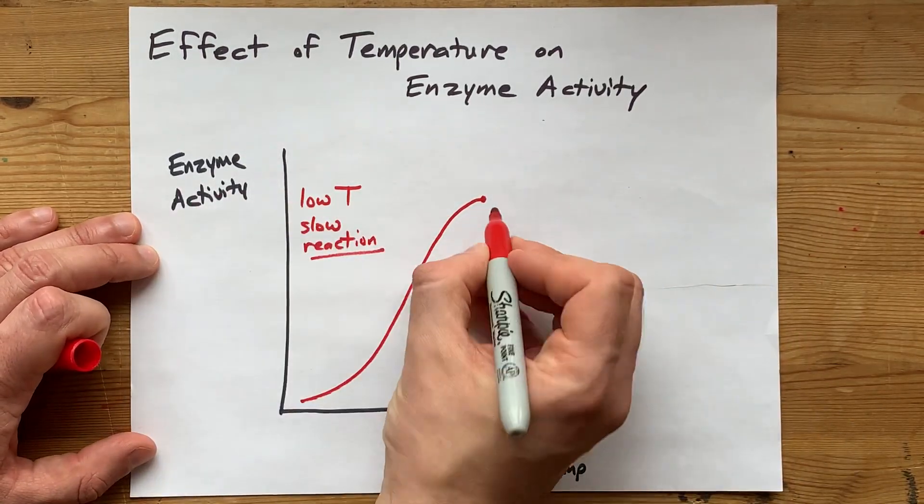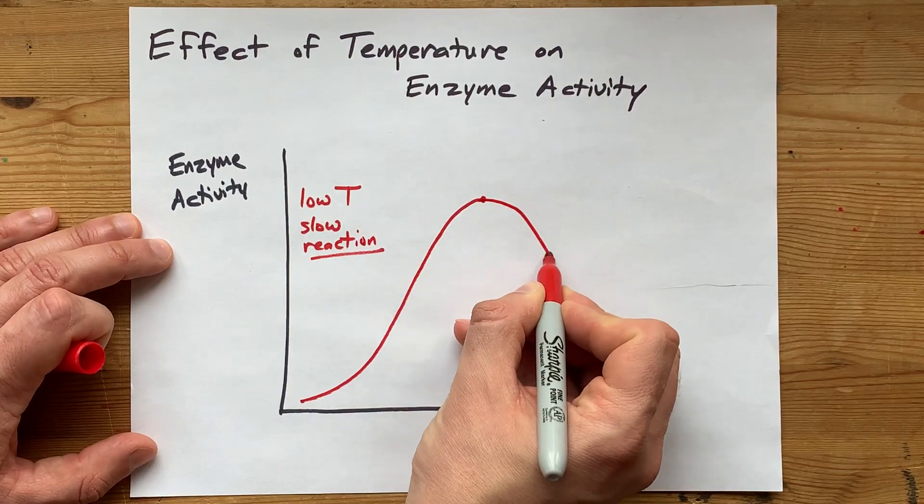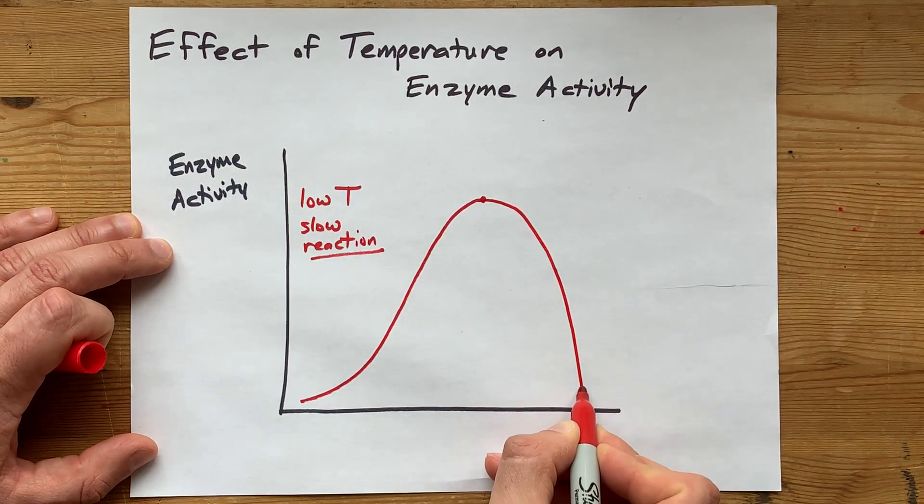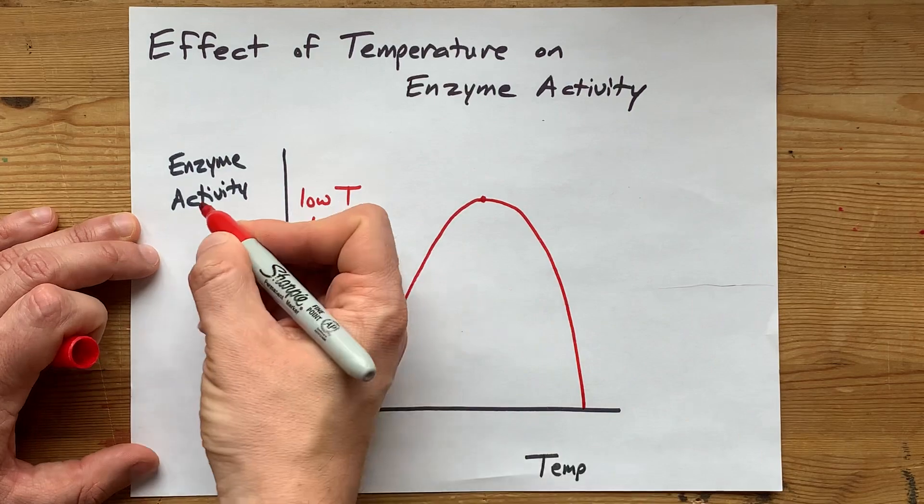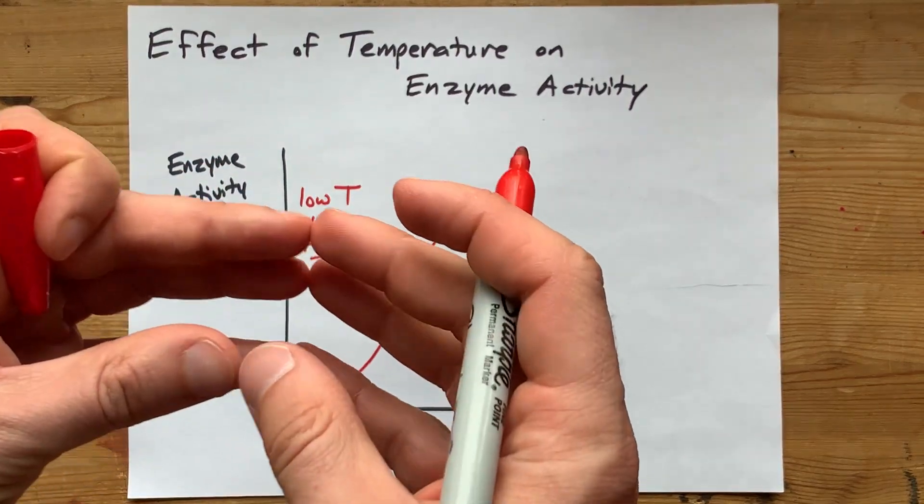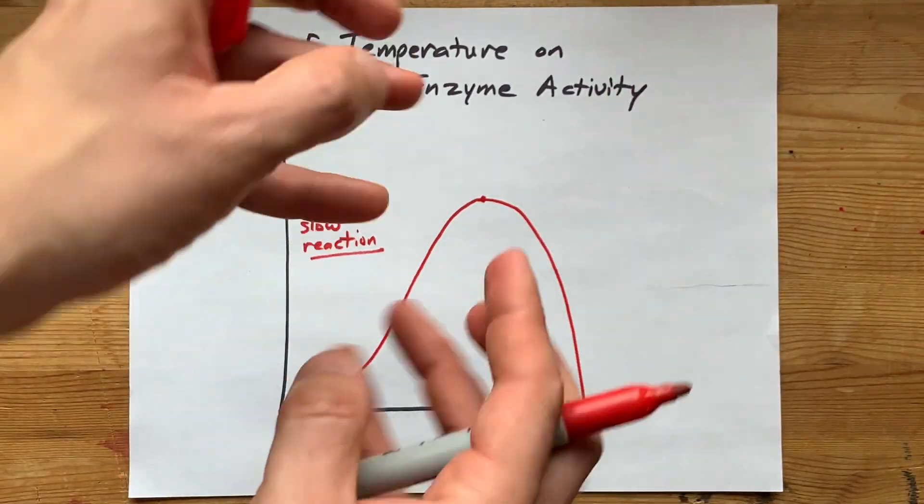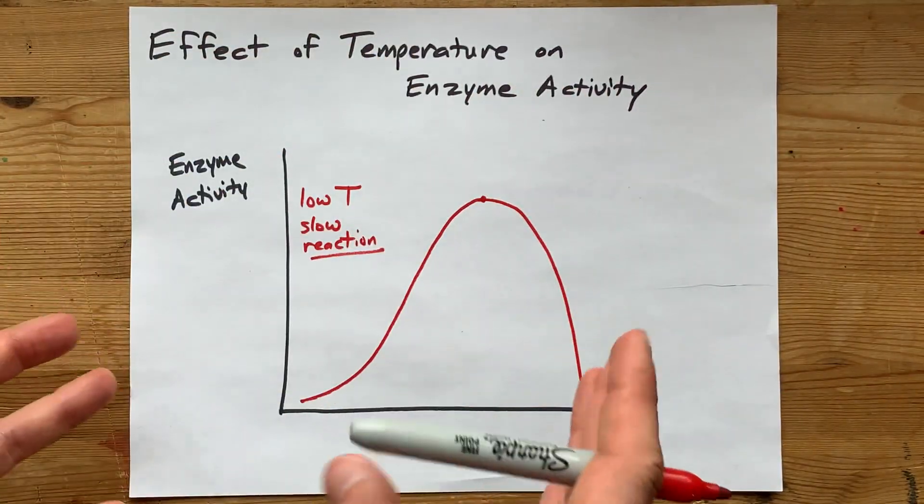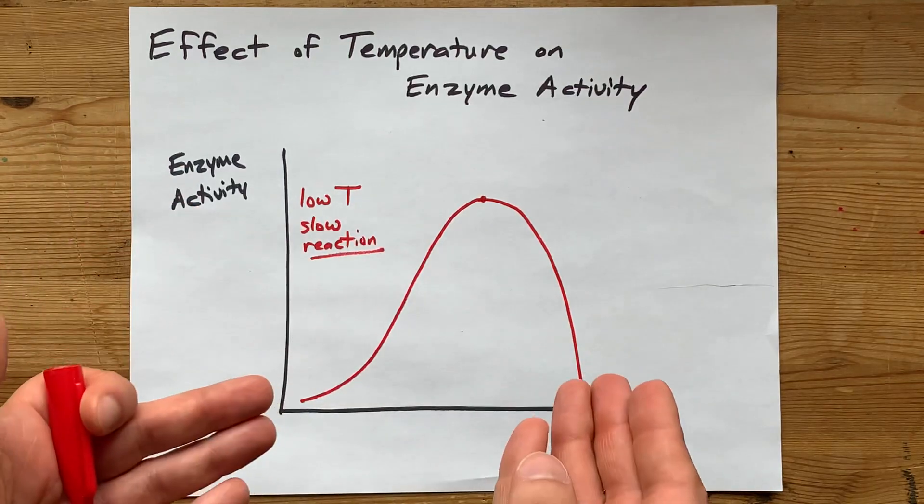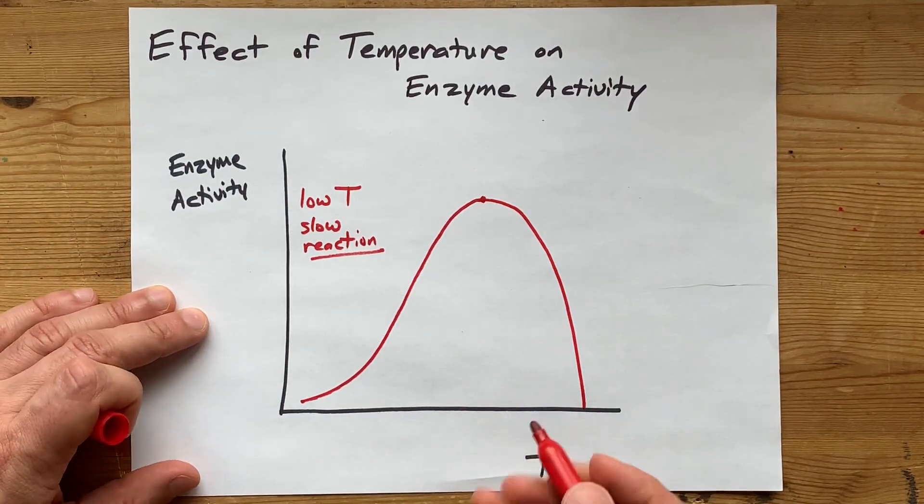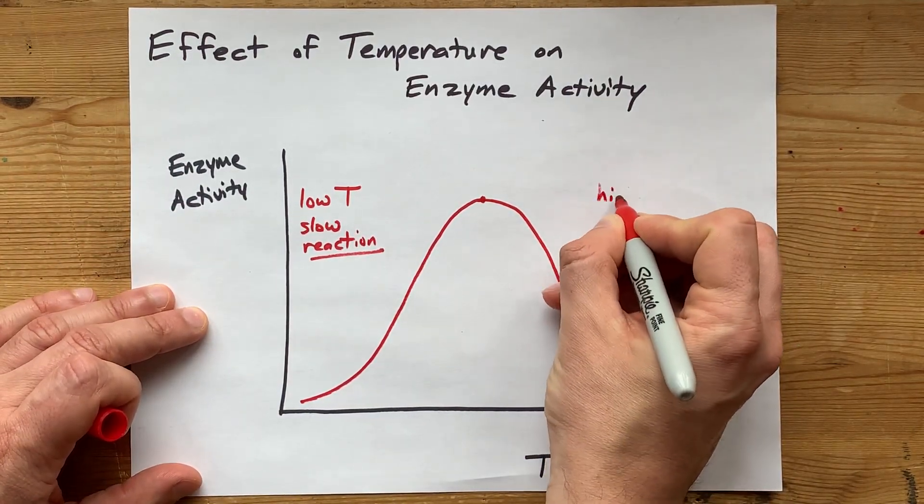But unfortunately for enzymes, that's not true. This curve ends up being truncated entirely, and that's because enzymes are protein-based molecules that allow one reactant in and catalyze a reaction in some other way. But because they're made out of proteins, if the temperature is high enough, then they get denatured,